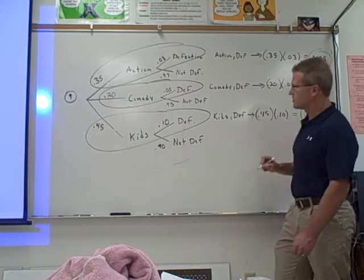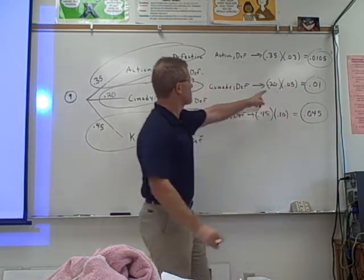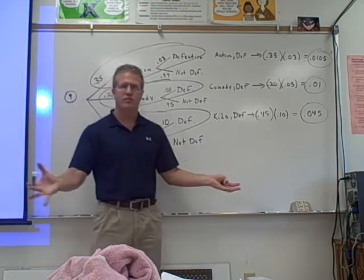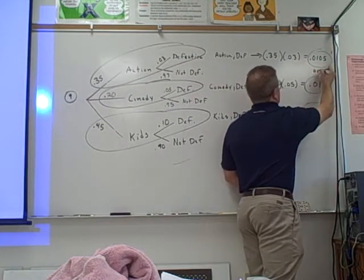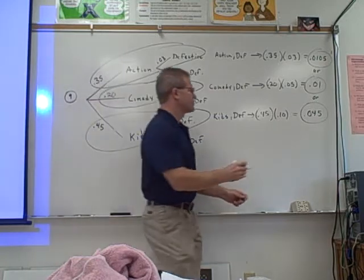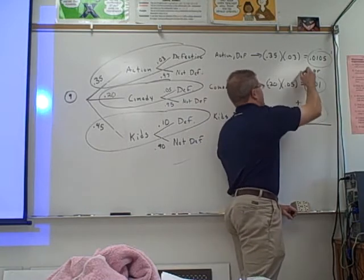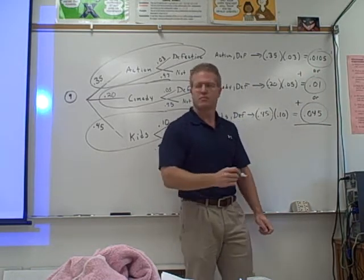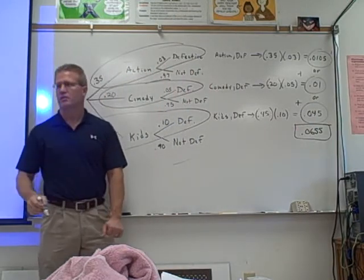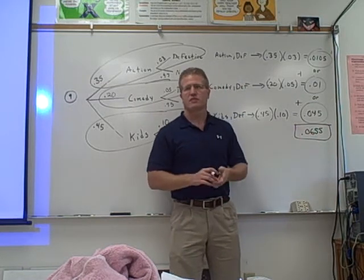So you've got three probabilities: the probability of a defective action movie, the probability of a defective comedy, and the probability of defective kids. But the question asks: what's the probability of getting a defective movie? So it could be action, comedy, or kids. When you hear 'or,' you add those numbers together. Add them up and you get .0655. You can also write that as 6.55%. Any of those answers are fine.